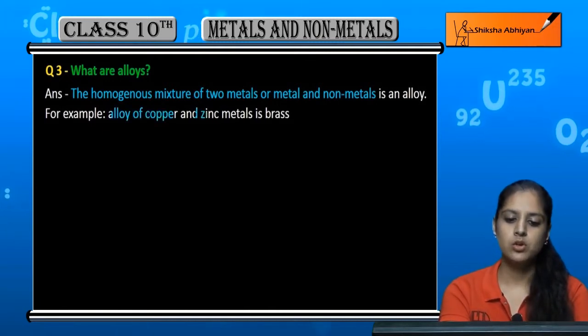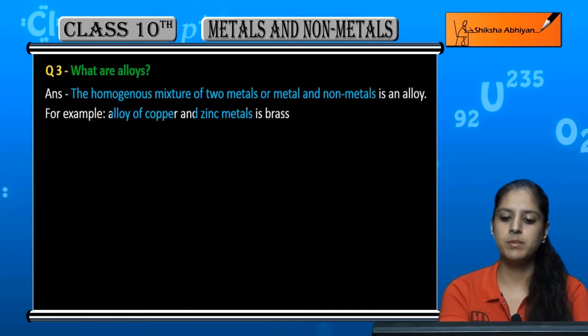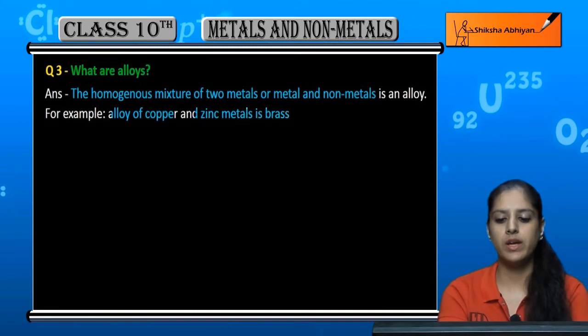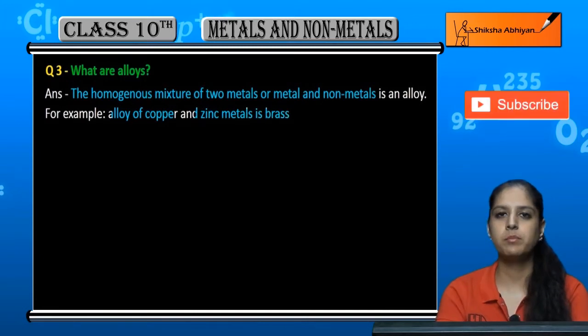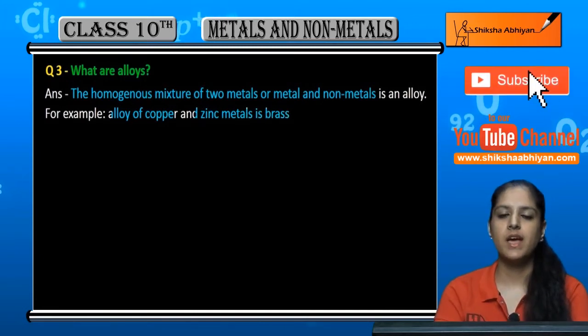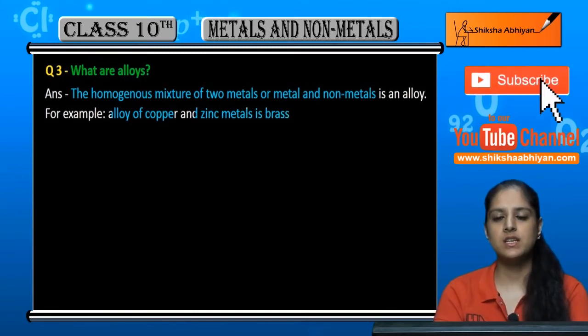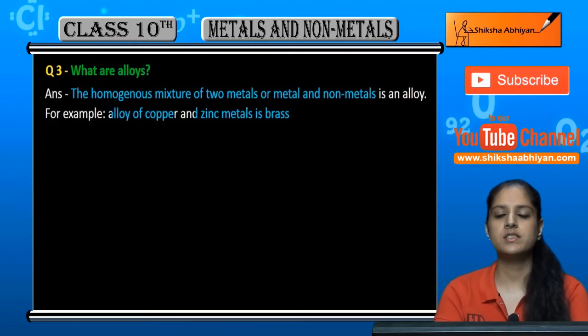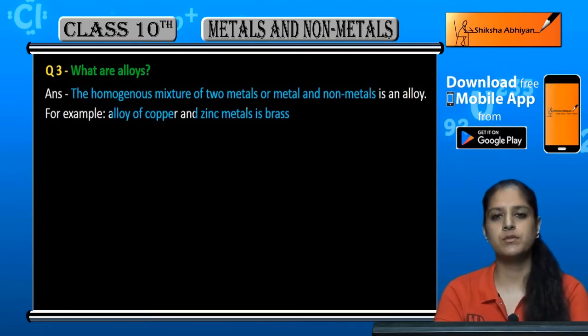For example, copper and zinc metal alloy is bronze. Stainless steel and bronze are also alloys, made from different metals and non-metals.